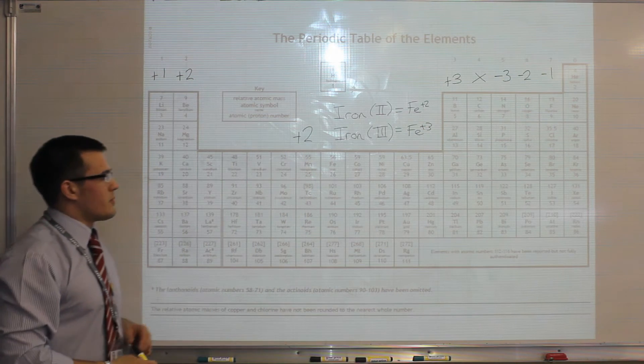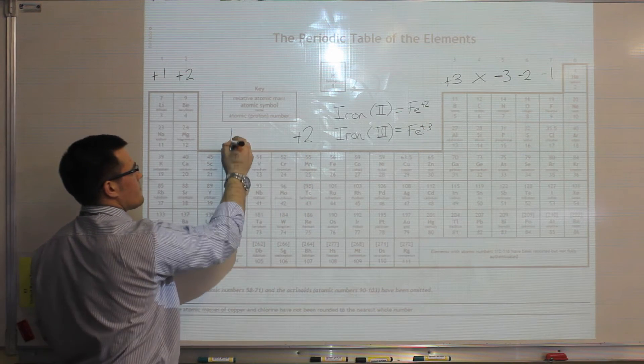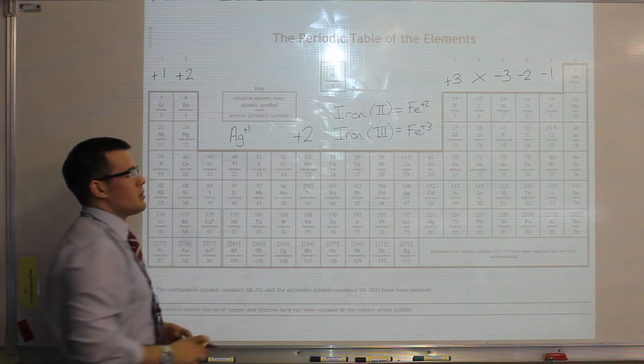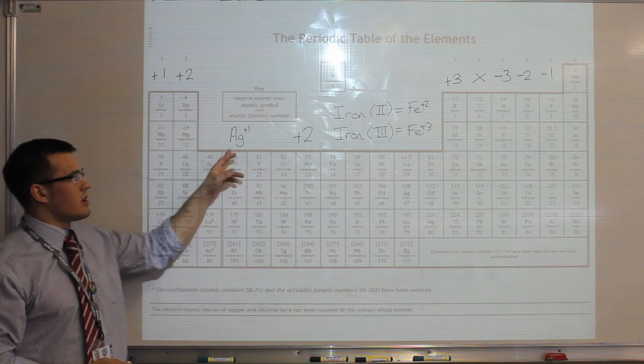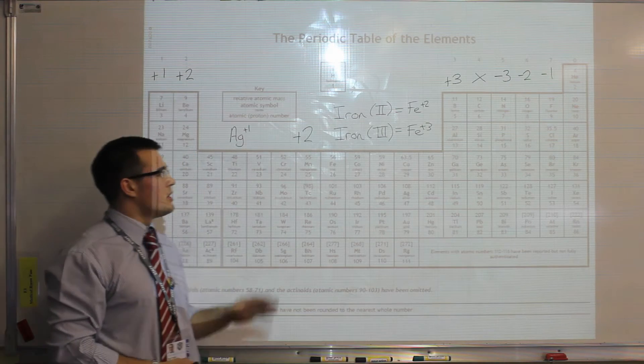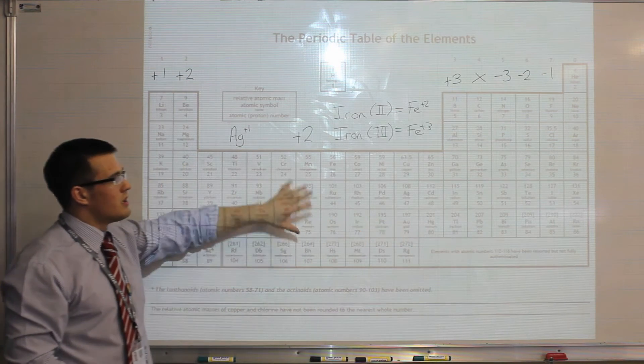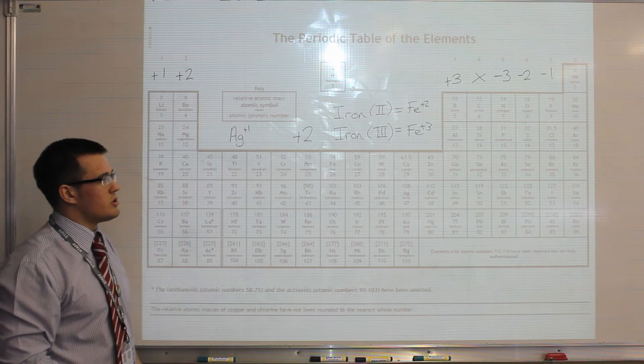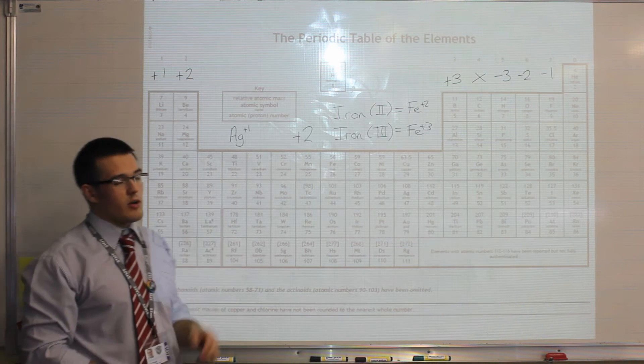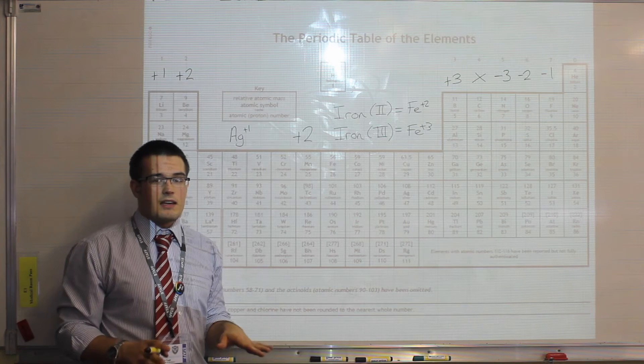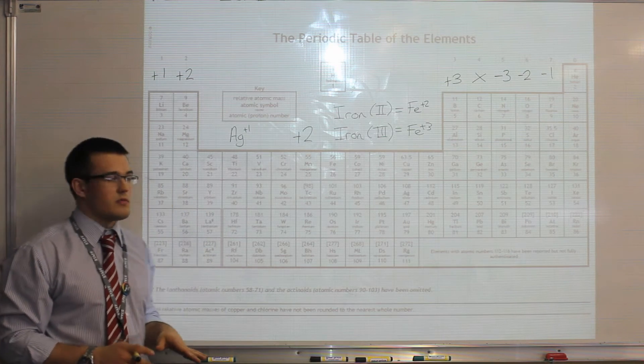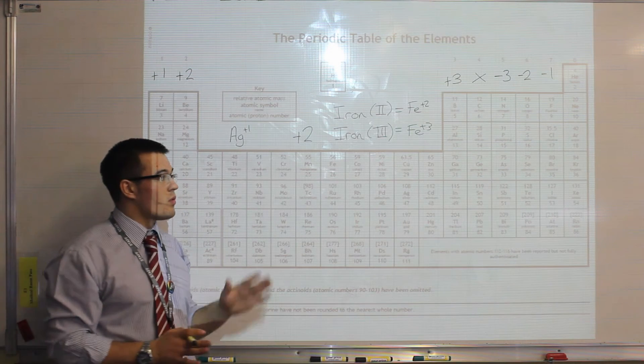The only other exception is silver, which is Ag, which just forms plus 1 charges, and those are the only exceptions you need to remember. So all of the others we can assume, for the time being at GCSE level, that they are plus 2 charges. So that is to help you remember any ion in the periodic table that is an element on its own, what its charge is.